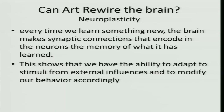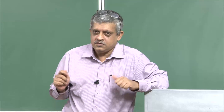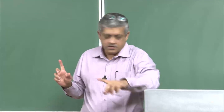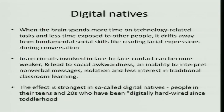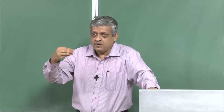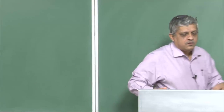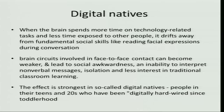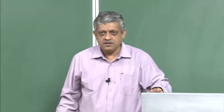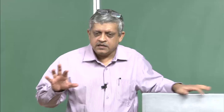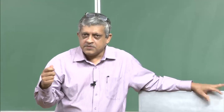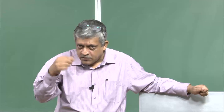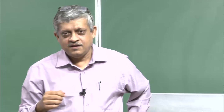What I would like to leave you with is the thought that art can be used to rewire the brain. This is called neuroplasticity, and it is very, very important in this group of people called digital natives — those who grow up with technology from childhood, who grow up with Facebook from childhood. Their brains spend more and more time on technology-related tasks and less time exposed to other people, drifting away from fundamental social skills. And often you will find that there is a lot of violence among young people because they have not realized how much or how little it takes to hurt another person.